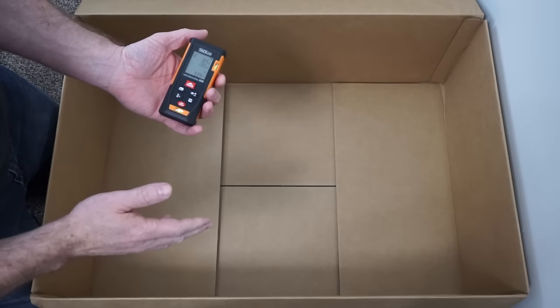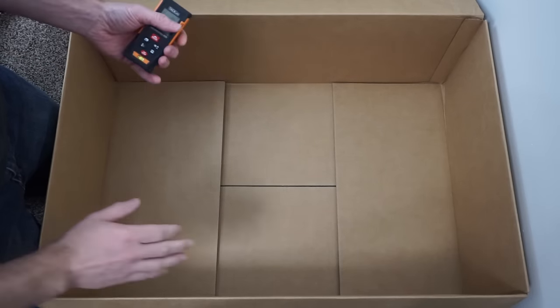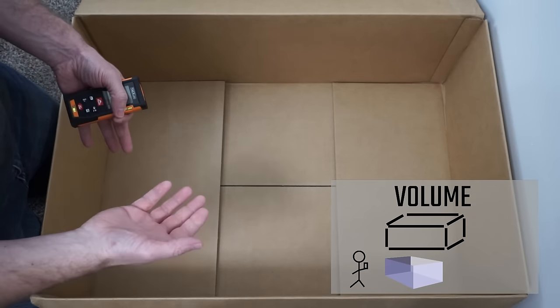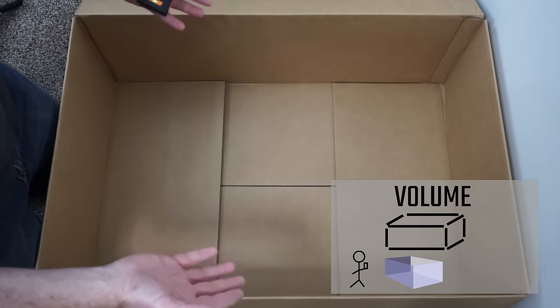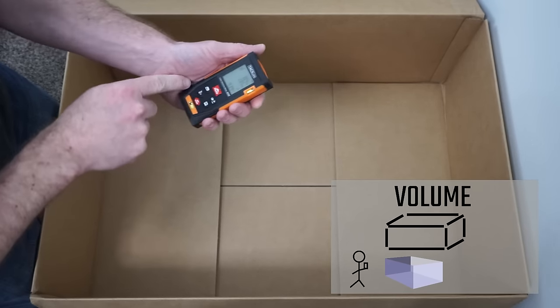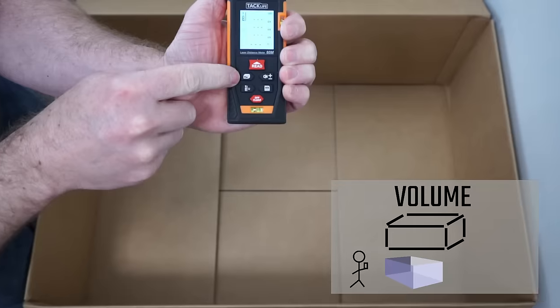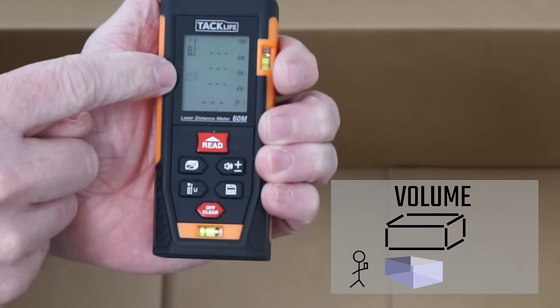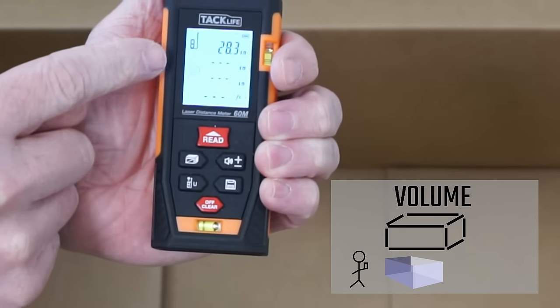Another thing you could do is measure cubic feet. So we could pretend this is the bed of a truck and we wanted to buy some pea gravel or something. So we need to know how big the bed of our truck is. So we could use this. Press this button until you see the cube icon. This is for feet squared.